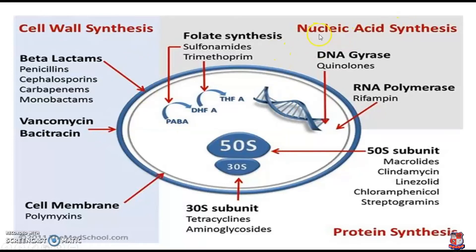The second main group is the nucleic acid synthesis inhibitors. This includes: first, the folate synthesis inhibitors; second, the DNA gyrase inhibitors; and third, the RNA polymerase inhibitors. For folate synthesis inhibitors, the main drugs are sulfonamide and trimethoprim. Sulfonamide can be used alone, and trimethoprim in combination with sulfonamide forms cotrimoxazole. Both inhibit folate synthesis.